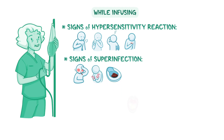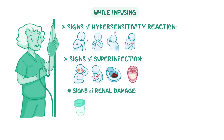Additional signs of superinfection include white patches on the inner cheeks, tongue, or roof of the mouth. Monitor for signs of renal damage as well, which can include decreased urine output, blood in the urine, or unusual weight gain.